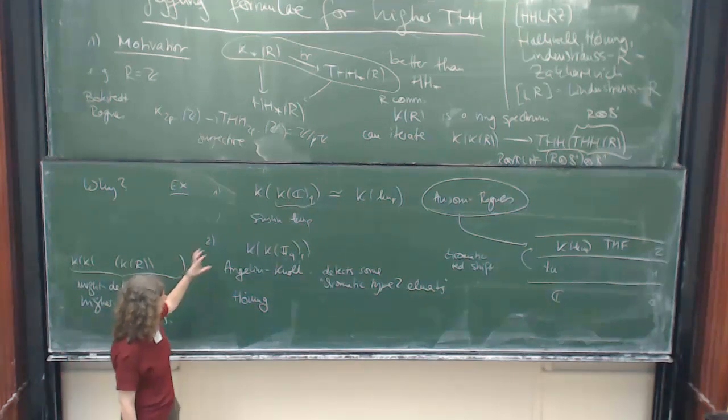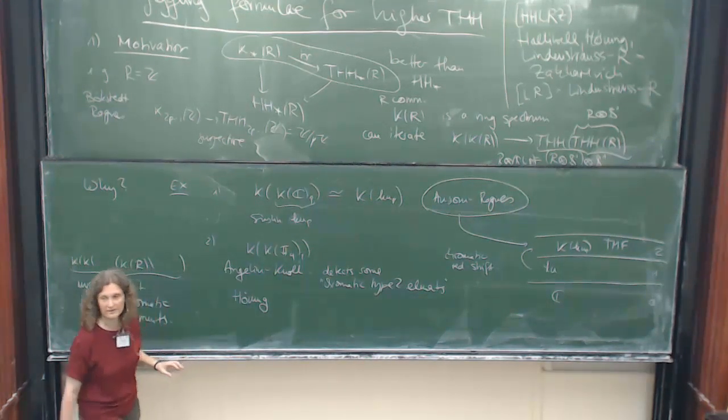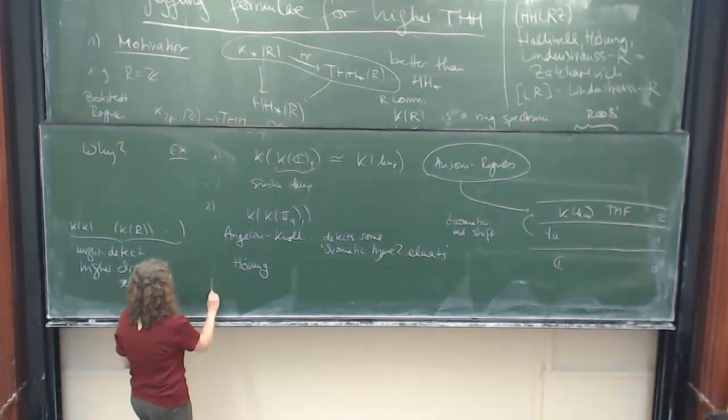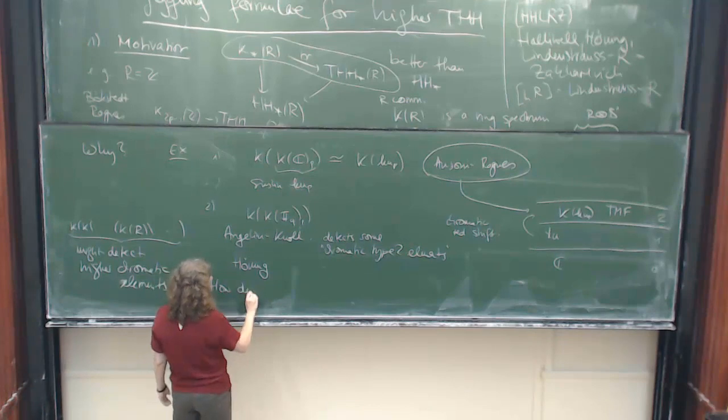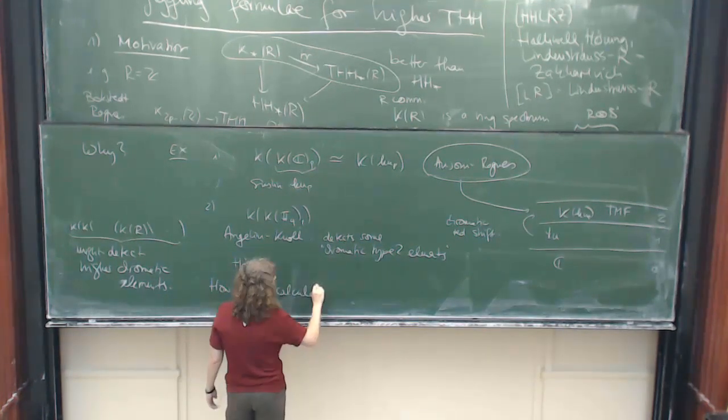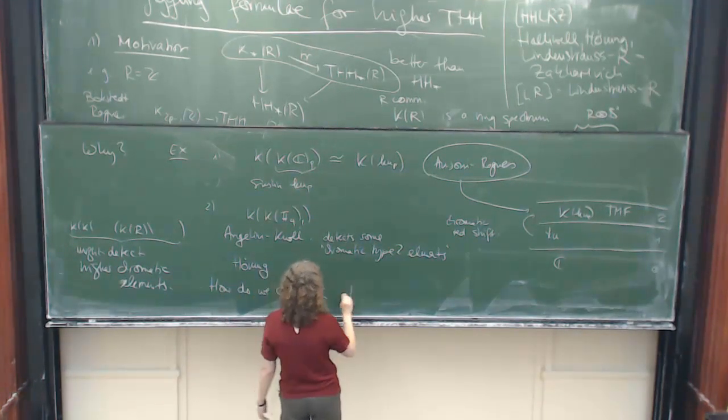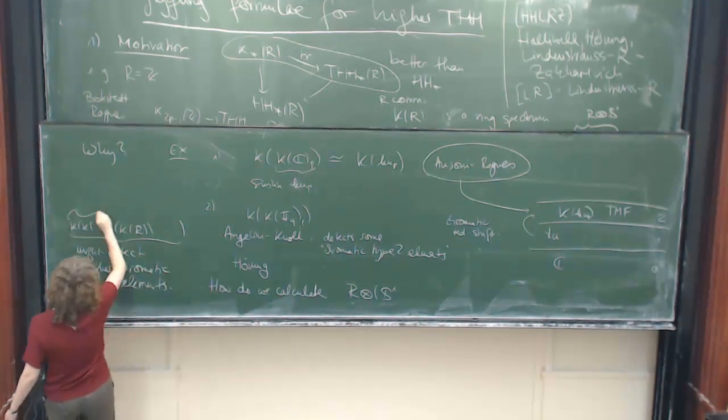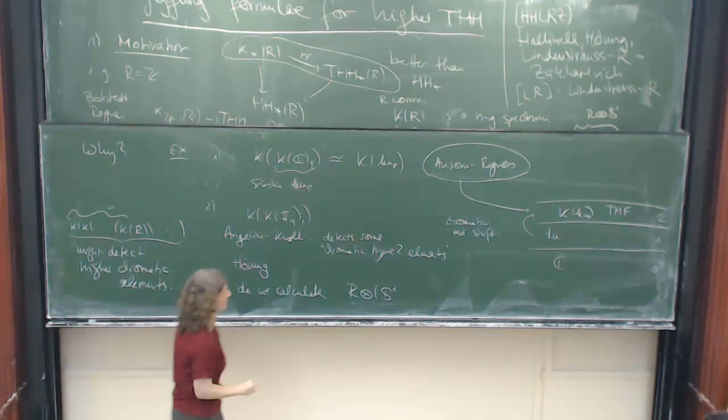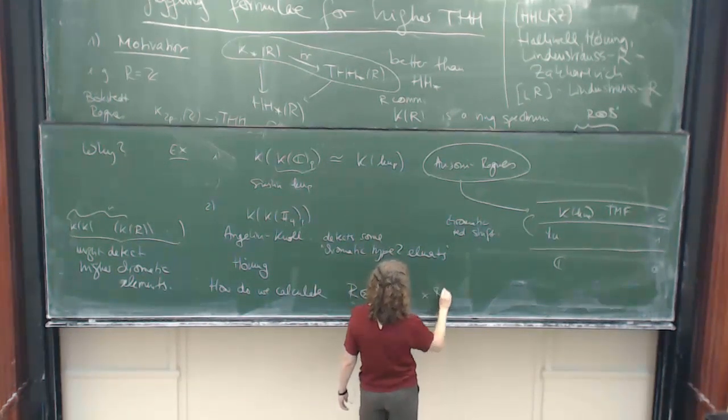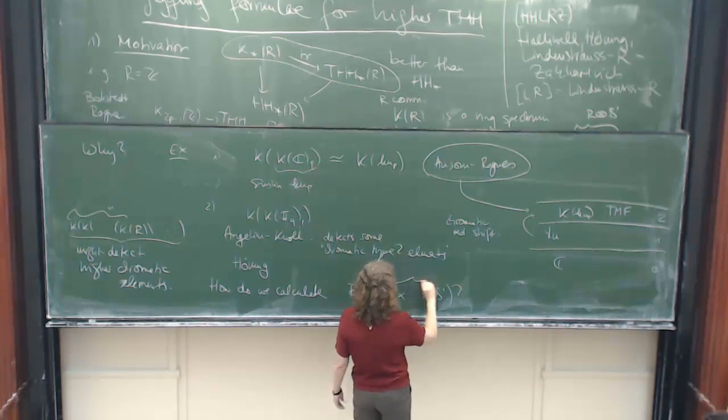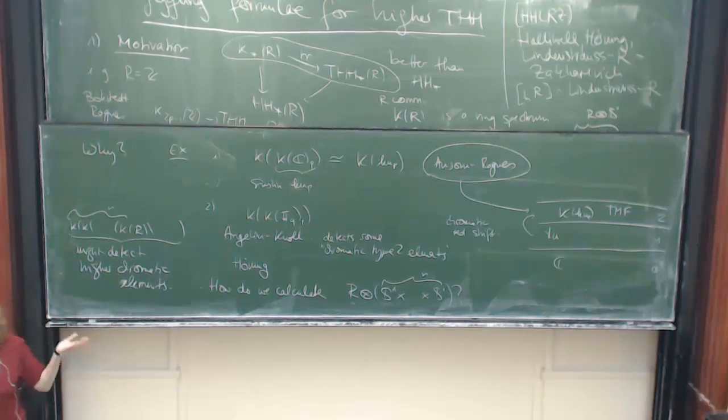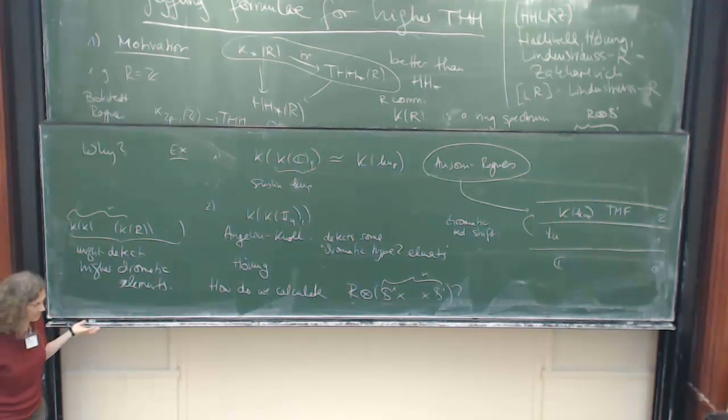But then the thing is, how do you calculate these things? How do you approximate these things? So everybody in this room knows that calculating K-theory is hard. So how do you then calculate the approximation? Well, and here what you get is, if you do this n times here, you actually get an n-torus.